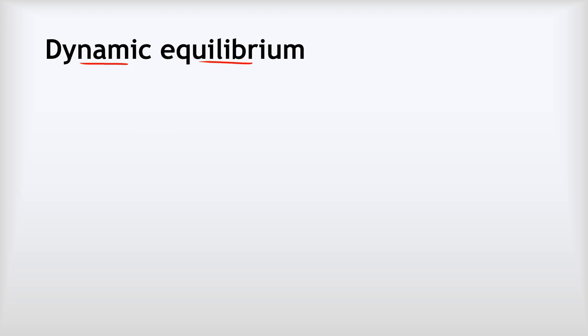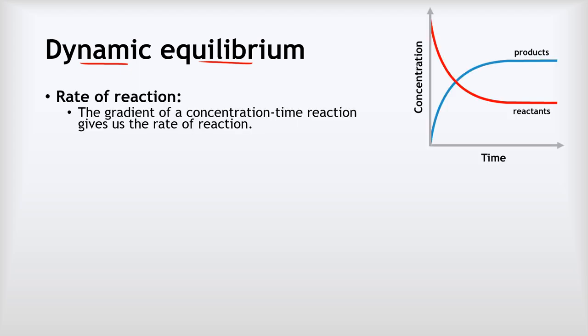Now we're going to meet a really important concept: dynamic equilibrium. To understand this, we need to think about the rates of chemical reactions and how we can show them on a graph. If we produce a graph of time on the x-axis and concentration on the y-axis, the gradient of that graph tells us the rate of the reaction. Where it's steeper, the rate is faster; where it's shallower, the rate is slower.